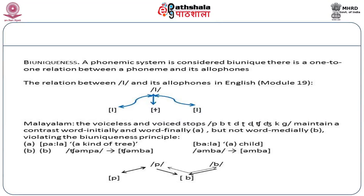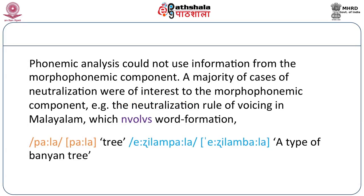Let's take a look at the data. In Malayalam, we have minimal pairs such as /pala/ and /bala/ meaning 'a kind of tree' and 'child.' But in the words /tʃampa/ and /amba/, we find that the distinction is lost. /tʃampa/ is pronounced as /tʃamba/ and /amba/ is also pronounced as /amba/. Looking at /ba/, it is not possible to tell whether it comes from /ba/ or from /pa/. There are two kinds of examples that tell us that the mixing of levels is something that cannot be avoided.